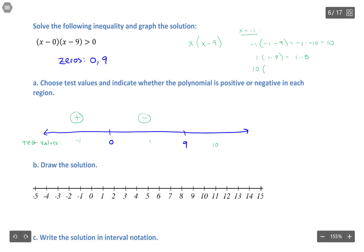Then at ten, I have ten times ten minus nine, which is ten times one, or a positive value.